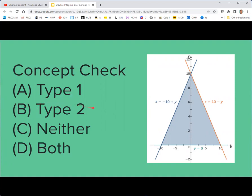So what do you think of this region? The correct answer here is B, that this is a type 2 region, where h1 would be negative 10 plus y, and h2 is 10 minus y. C would be 0, and then D would be 10.